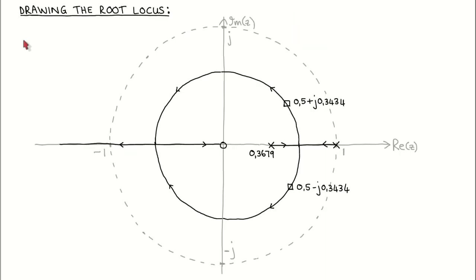A common way to use the root locus for controller design is software that numerically calculates and draws the root locus, allowing interactive adjustment of the controller gain with the resulting closed loop poles plotted in real time. However, it is very useful to plot the root locus by hand, as this gives understanding of how the plant and controller influence closed loop pole locations, helping us choose appropriate controller structures for desirable closed loop behavior. Since the magnitude and angle conditions of the discrete time root locus are in the same form as the continuous time case, the same hand-sketching guidelines apply.